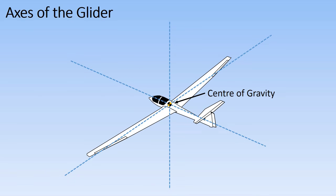When the glider is flying it can rotate around its centre of gravity along each of the three axes. We call these rotations pitch, roll and yaw.